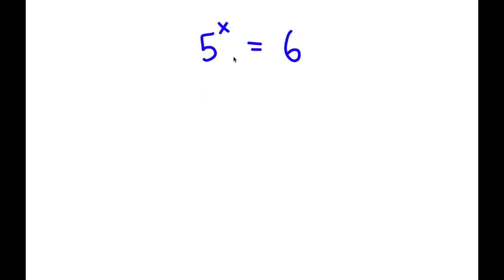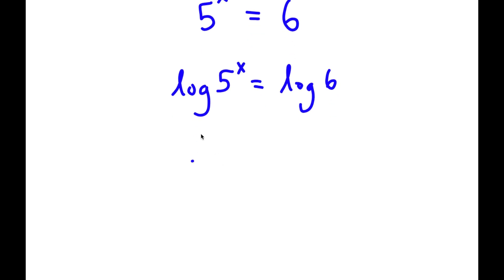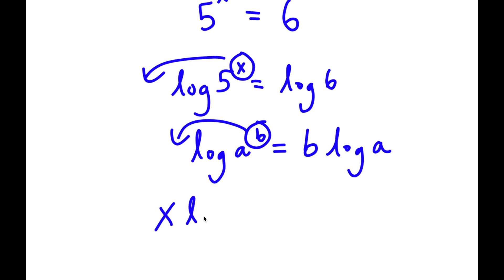In this problem, I have 5 to the power of x is equal to 6. To solve this, I'm going to take the log on both sides. So now I have log of 5 to the power of x is equal to log 6. Using the rule that log a to the power of b equals b times log a, I can move x to the front. So this equals x times log 5, which is equal to log 6.